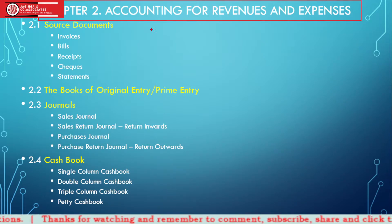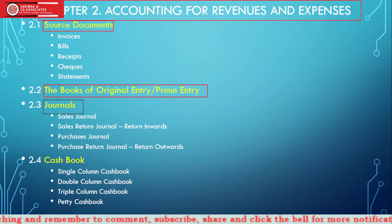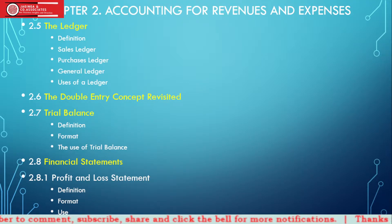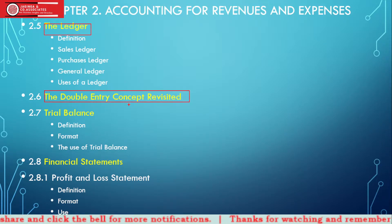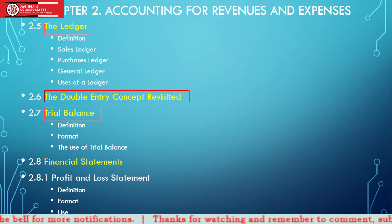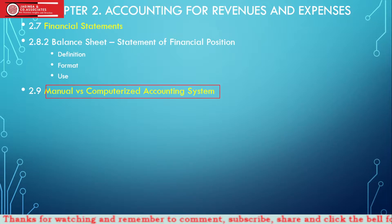In chapter 2 we'll learn about source documents, the books of original entry, journals, cash book, ledgers, the double entry concept, trial balance, financial statements, and lastly the manual versus computerized accounting system.